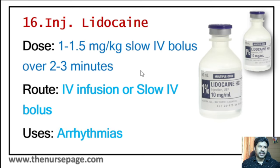Thirty-first injection is haloperidol (repeated). Indications include acute psychosis, severe agitation, mania, and delirium. Route of administration is IM or IV. Recommended dose is 2 to 5 milligram IM or IV, repeated every 4 to 8 hours as needed.